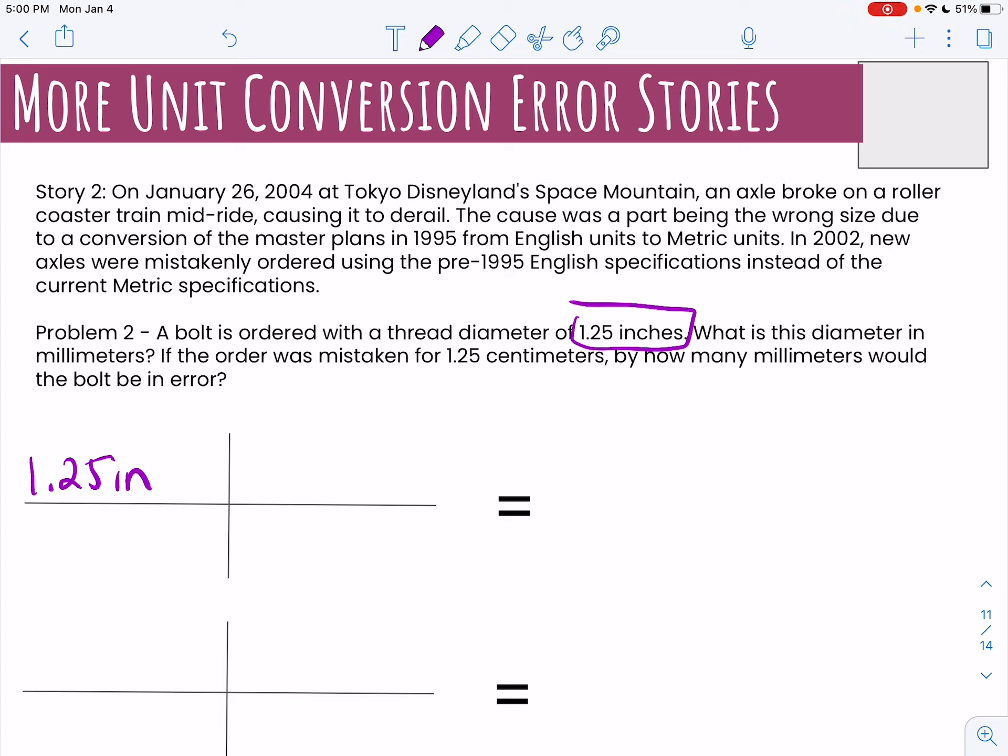So if I have 1.25 inches, I'm just going to go ahead and look up the conversion. I think it's 25.4. So 1 inch is 25.4 millimeters, I'll go ahead and write that on. Here's my inches on the top so I know I have to put inches under here with the 1.